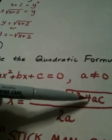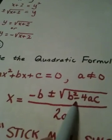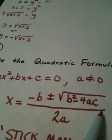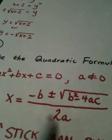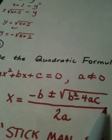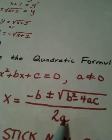b squared minus 4ac, b squared minus 4ac, all over 2a, all over 2a.